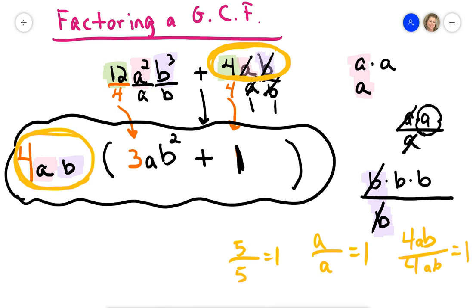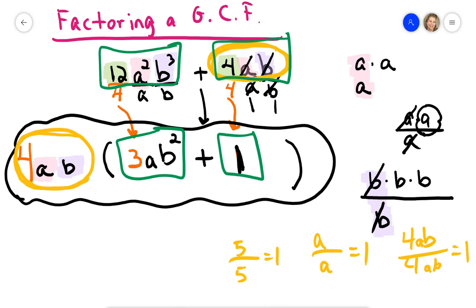A lot of times, people think, oh, that just cancels out and there's nothing there. No, you are dividing something from it. There's got to be a factor left. If you start with two factors in the beginning, you have to have two factors when you're done.